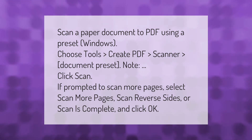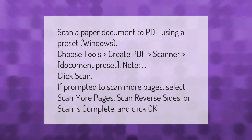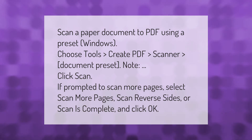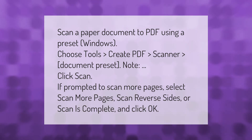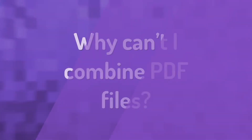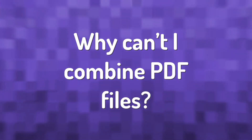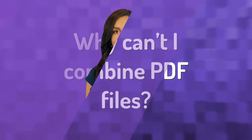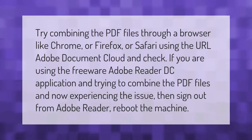To scan a paper document to PDF using a preset in Windows, choose Tools, then Create PDF, then Scanner, then Document Preset. Click Scan. If prompted to scan more pages, select Scan More Pages, Scan Reverse Sides, or Scan as Complete, then click OK.